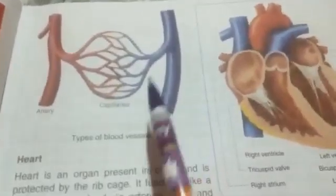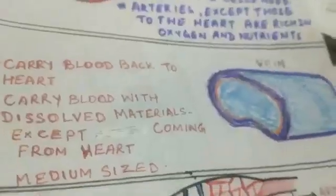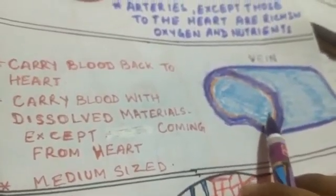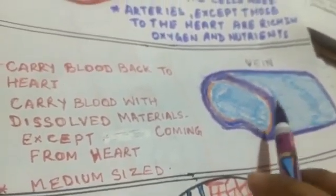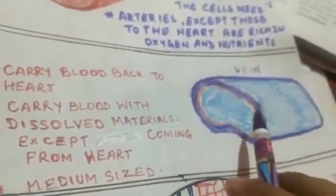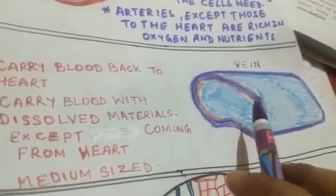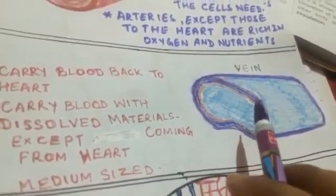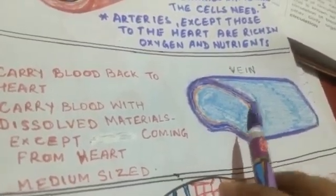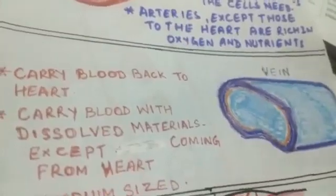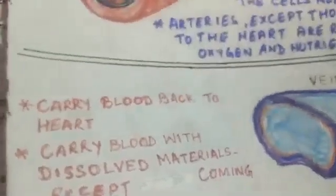Now we will learn about the second type — the blue-colored ones — which are the veins. Veins carry blood back to the heart. This blood is deoxygenated, meaning it is rich in carbon dioxide and dissolved materials, except for the pulmonary vein coming from the lungs.